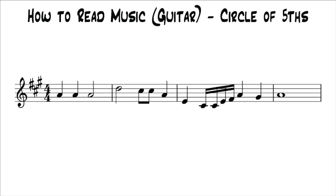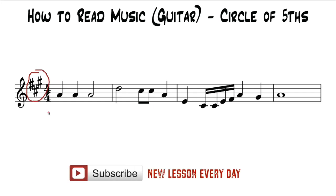This is part 17 from our series How To Read Music For A Guitar. If you'd like to go back and start at the beginning, you can click the link on the screen. In the last lesson, we talked about the major scale and major scale keys and how key signatures are based on major scale keys. Key signatures aren't just random groupings of sharps or flats — they're specifically based on major scale keys.